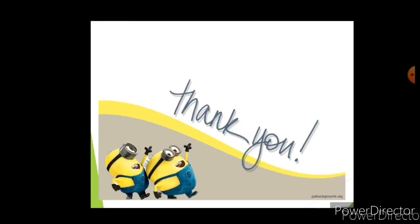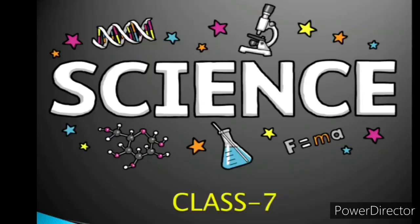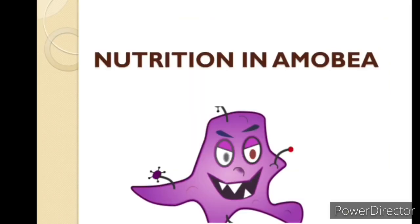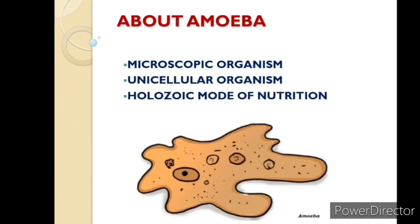Hello everyone, in this video we will continue Chapter 2 of class 7, Nutrition in Animals. In this video we are talking about nutrition in amoeba — how nutrition takes place in amoeba. First, amoeba is a microscopic organism, meaning we are not able to see it with the naked eye. Second, amoeba is a unicellular organism — only one cell is present in its body.